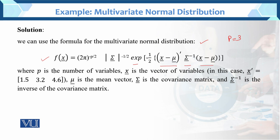Where p is the number of variables, or the dimension. x is the vector of variables; in this case x-transpose equals (1.5, 3.2, 4.6) — these are the particular points given. Mu is the mean vector, which is also given. And sigma, the variance-covariance matrix, is given. We have to find what we need to compute for this particular example with numerical data.